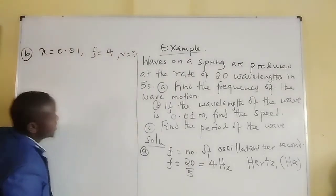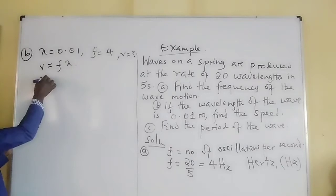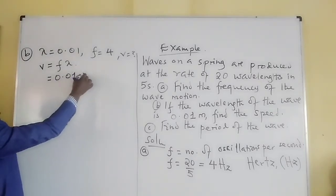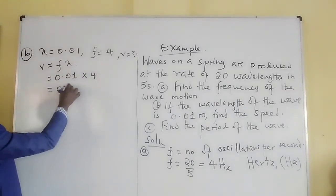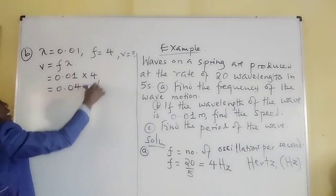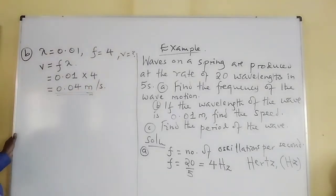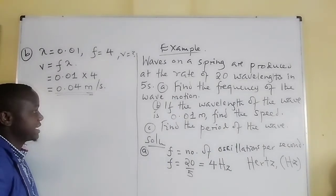Remember we said that velocity v is given by f multiplied by lambda. So it will be 0.01 multiplied by 4. This will be 0.04 meters per second. Therefore, the velocity is 0.04 meters per second.